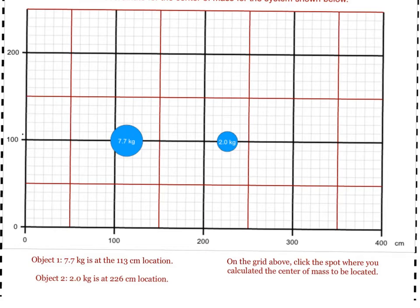This is how you will find the center of mass of a system of particles. Start by establishing a pivot point. I'm going to use my pivot point at the zero centimeter mark.